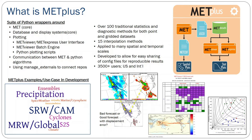There are a lot of use cases in development. Over on the left-hand side, there's a word map that gives you a sense of the number of use cases currently in our repository. The biggest ones are medium-range weather, short-range weather, and precip. We have a fair amount of focus on tropical cyclones as well as extratropical cyclones. We've been developing more S2S capability, a little bit of climate, space weather, air quality and data assimilation, marine and cryosphere, as well as ensembles.